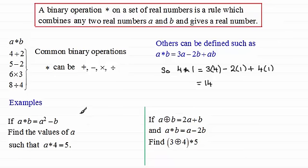OK, welcome back then, if you had a go. So let's just look at this first one here. If a star b, or a combined with b, equals a squared minus b, find the value of a such that a star 4 equals 5. So using this definition here, we've got a squared minus the 4 must equal 5. So if we add 4 to both sides, we therefore get a squared equals 9. And if we square root both sides, a must equal plus or minus the square root of 9, being 3. So it said find the value, so we've got two values here.